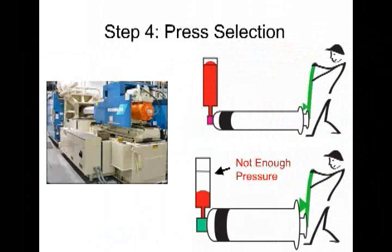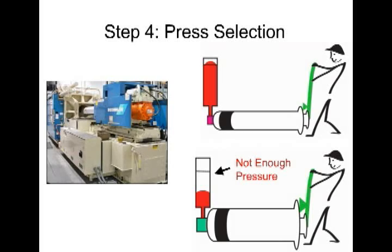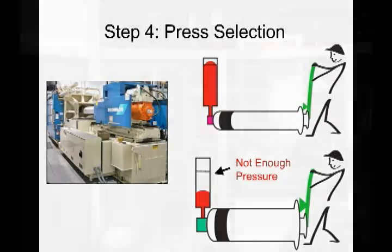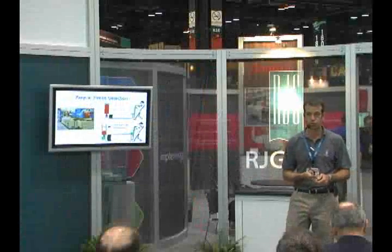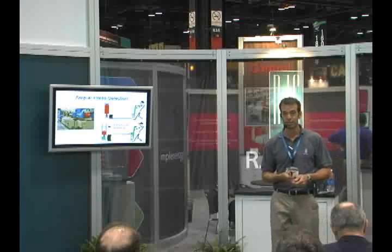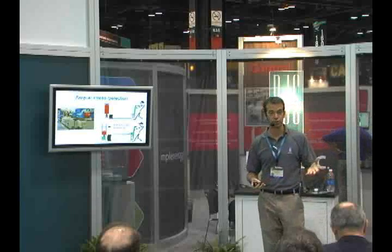Another important variable is the ability of the machine to pressurize that cavity. If you're getting into thin-walled polycarbonates or filled materials, you need to be very careful about press selection based on the expected plastic pressures required to make a good part.